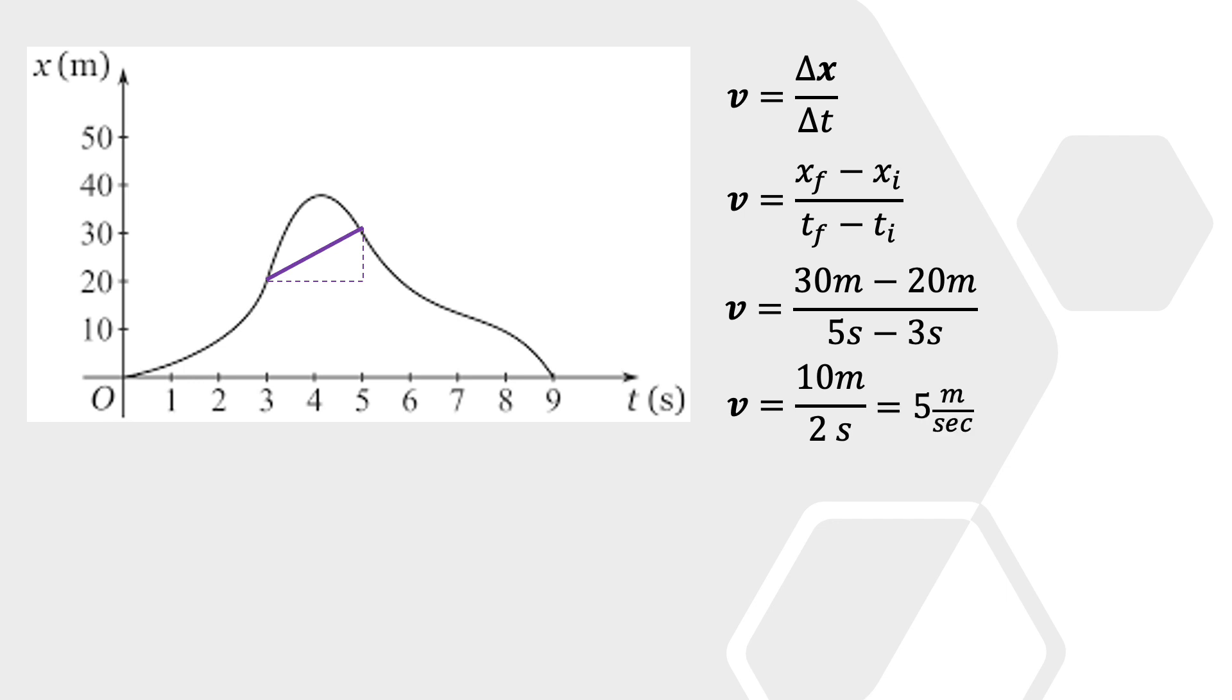Now, obviously, the object is not moving a constant 5 meters per second in that time period. So, what did I calculate? Well, I actually calculated the average velocity, and that velocity occurs at that moment right there at about 4 seconds. And this should remind you of the mean value theorem in calculus AB.